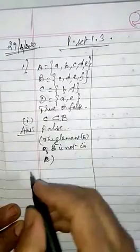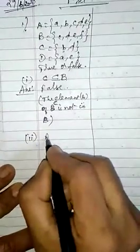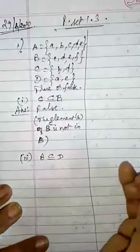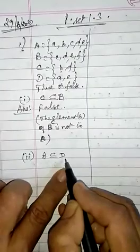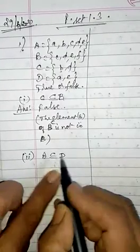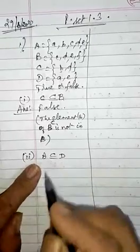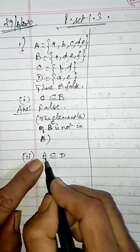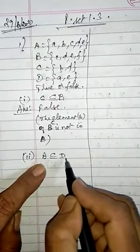We will continue with the second problem. What is the second sum? A is a subset of D. As I said, the one which is smaller is A, and the one which is bigger is D, because the mouth is open towards D. So A is the small set, and all the elements of set A should be in D.